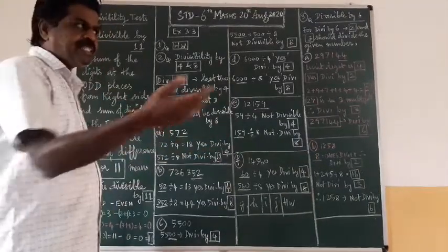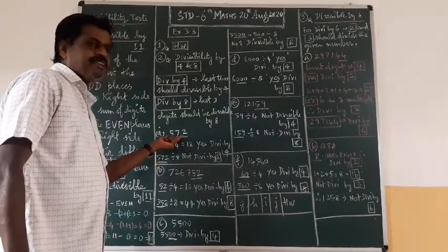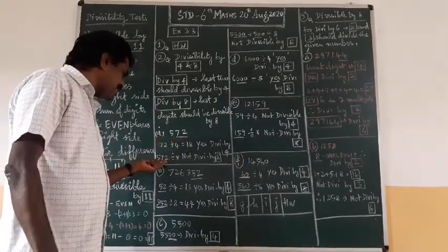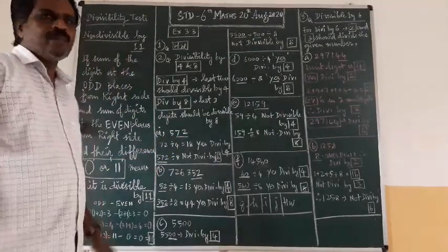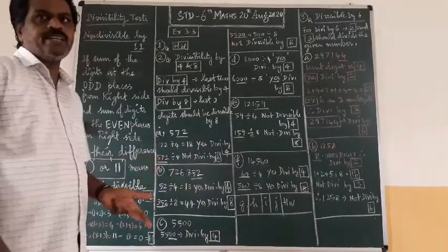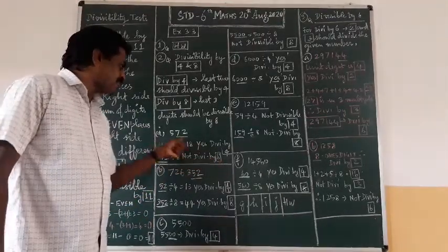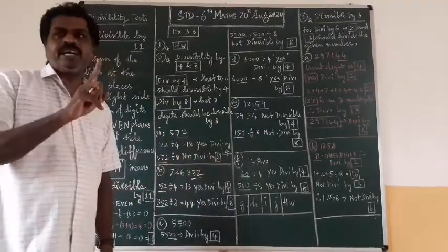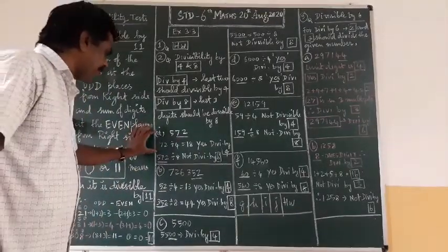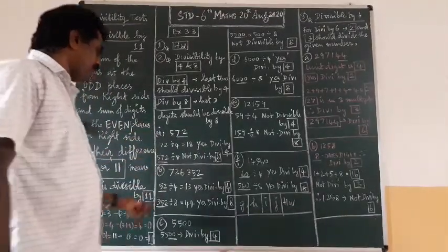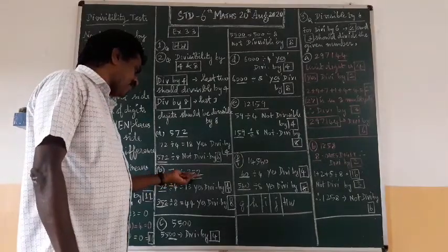Now check 572 for eight. Take the last three digits: 572. Is 572 divisible by eight? 56 ÷ 8 = 7 with remainder 12 — no, it cannot divide. So 572 is not divisible by eight.